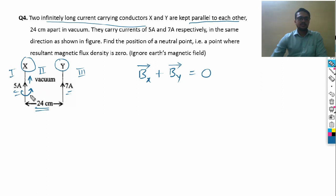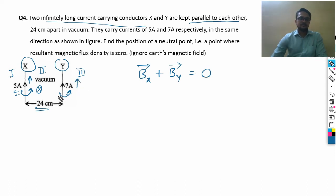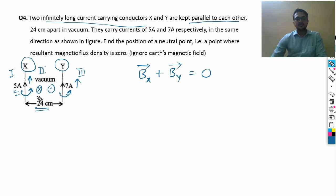For wire X, with current going in this direction, the thumb represents the direction of current. On the right side of X, the fingers go inside — meaning the magnetic flux density is perpendicularly inward. For wire Y, curling the fingers similarly, on the left side of Y the fingers come out — the magnetic field points outward.